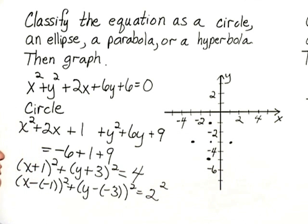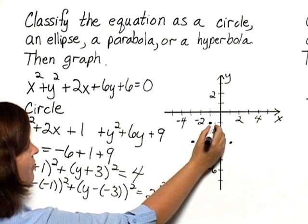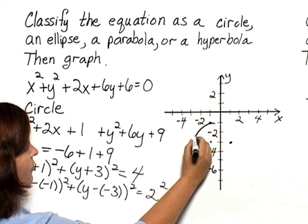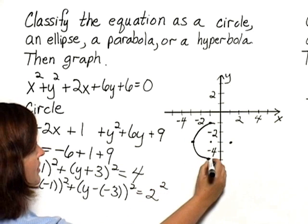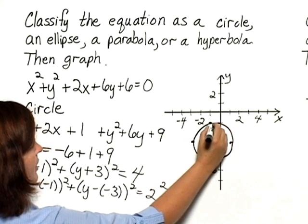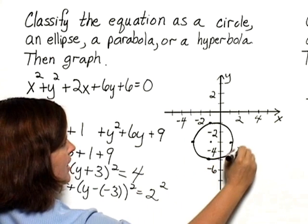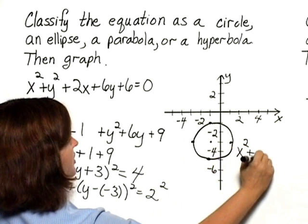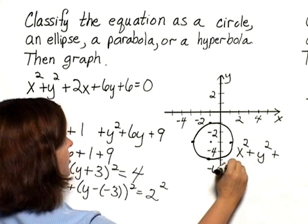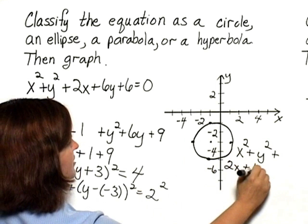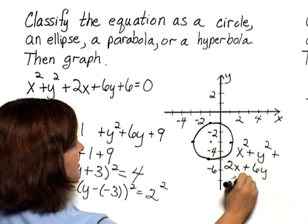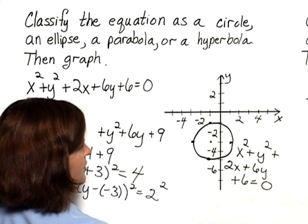Those are 4 points that are on the circle, so we'll do our best to draw a circle through those points. And that will be the graph of the equation x squared plus y squared plus 2x plus 6y plus 6 equals 0.